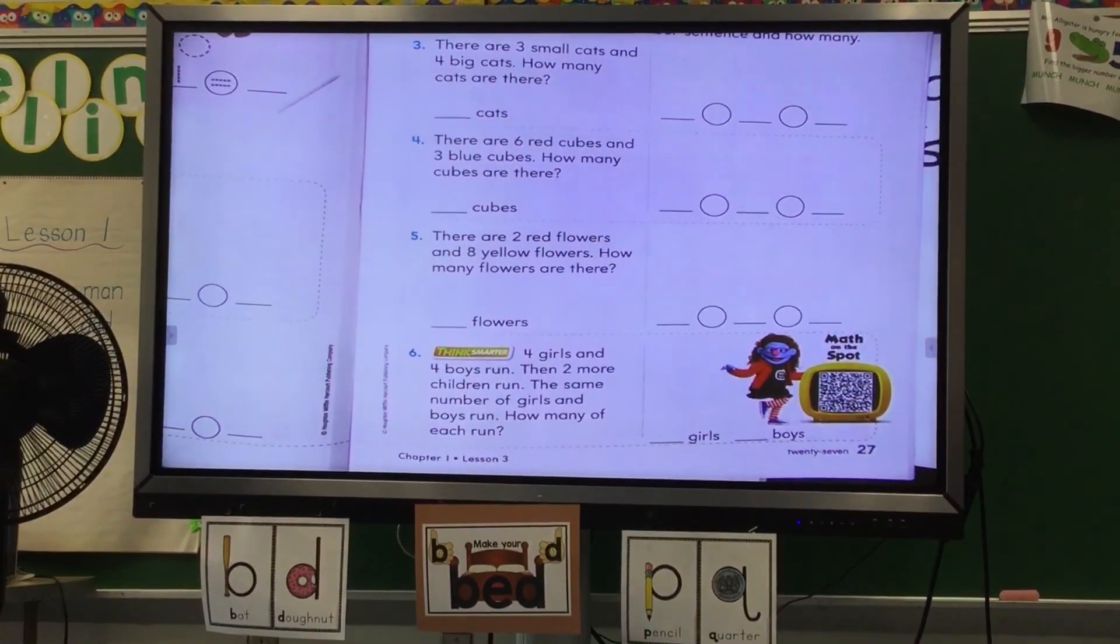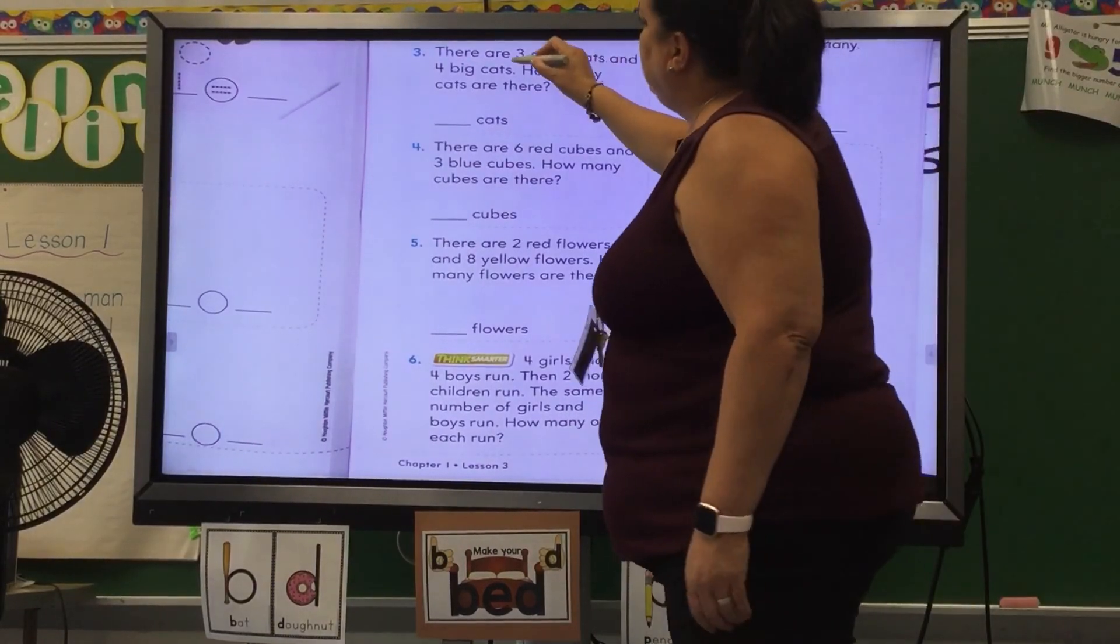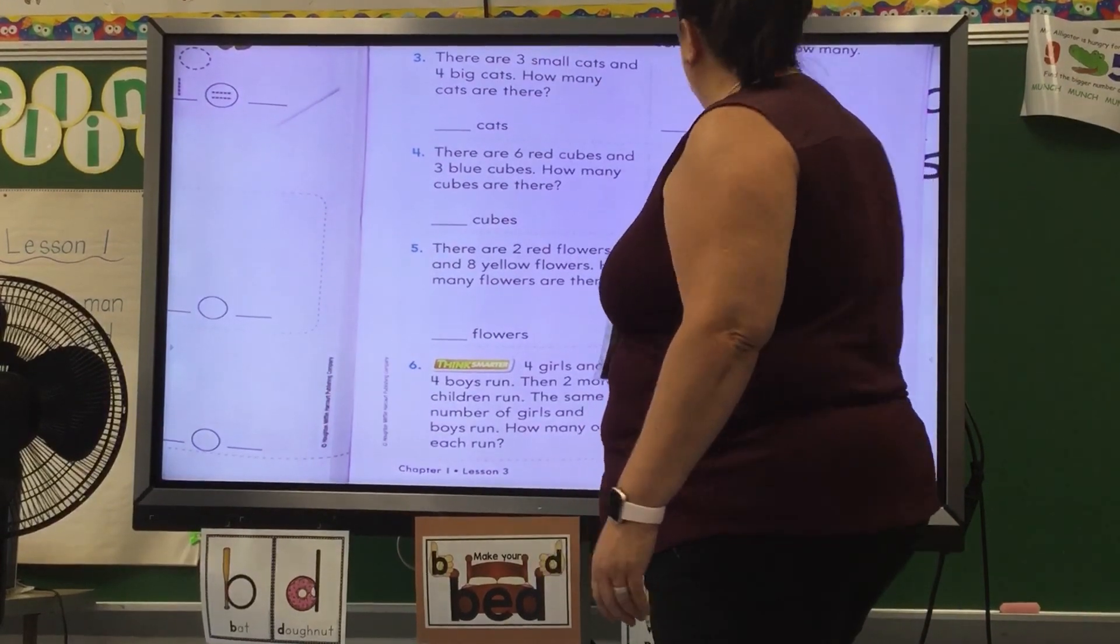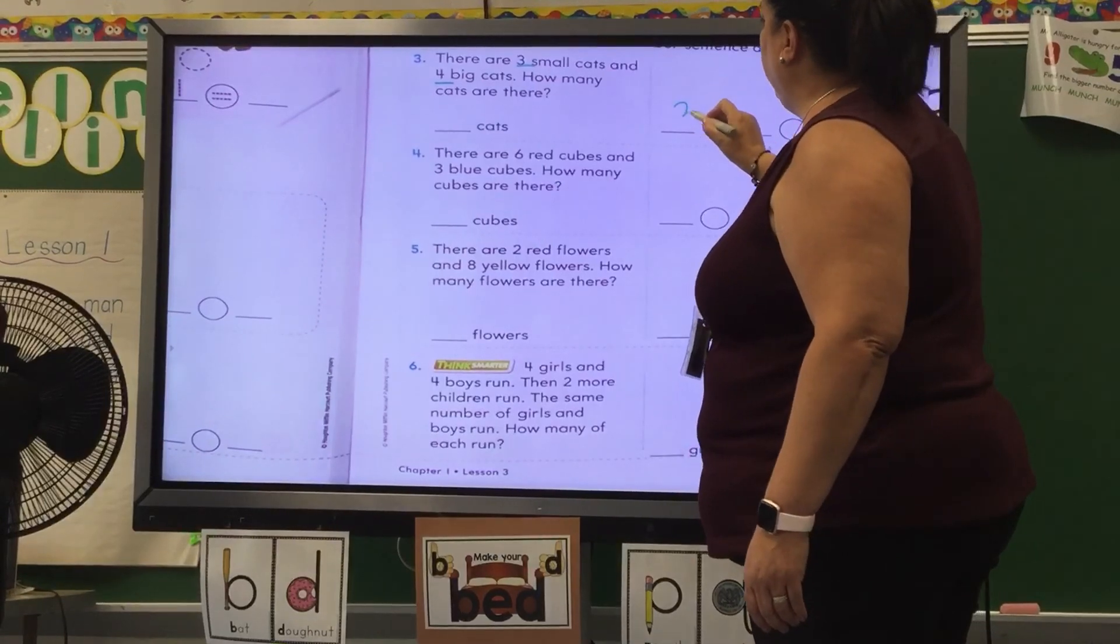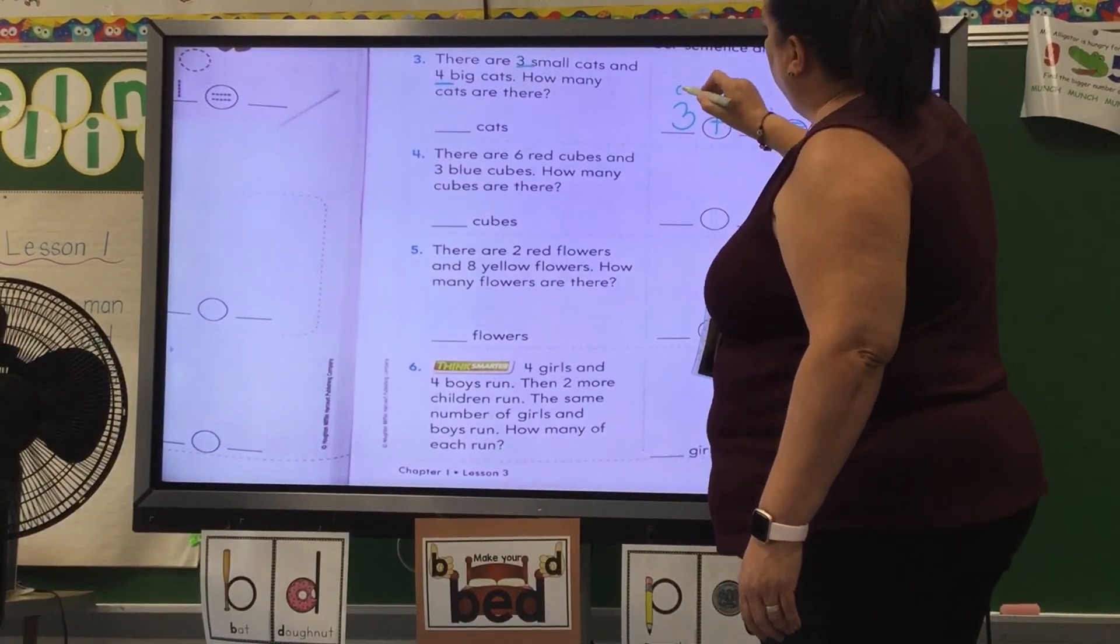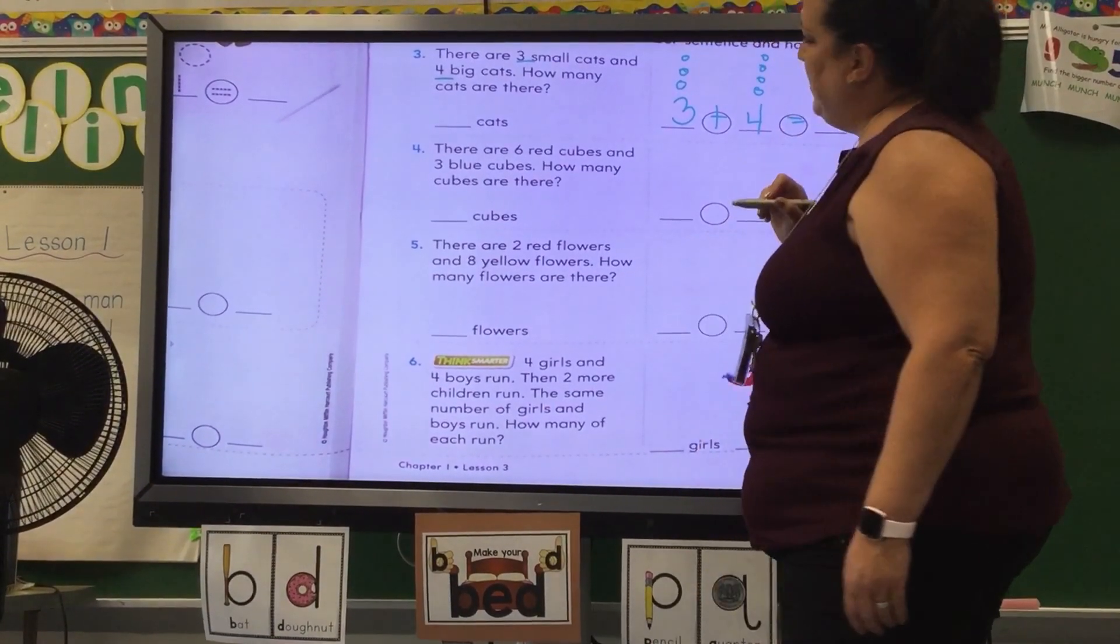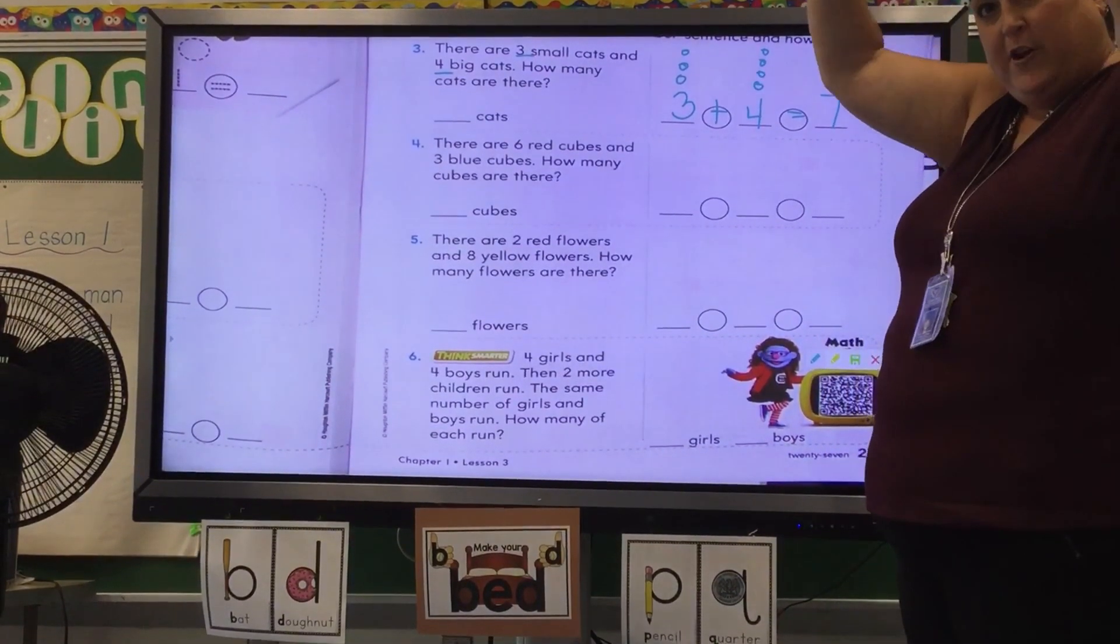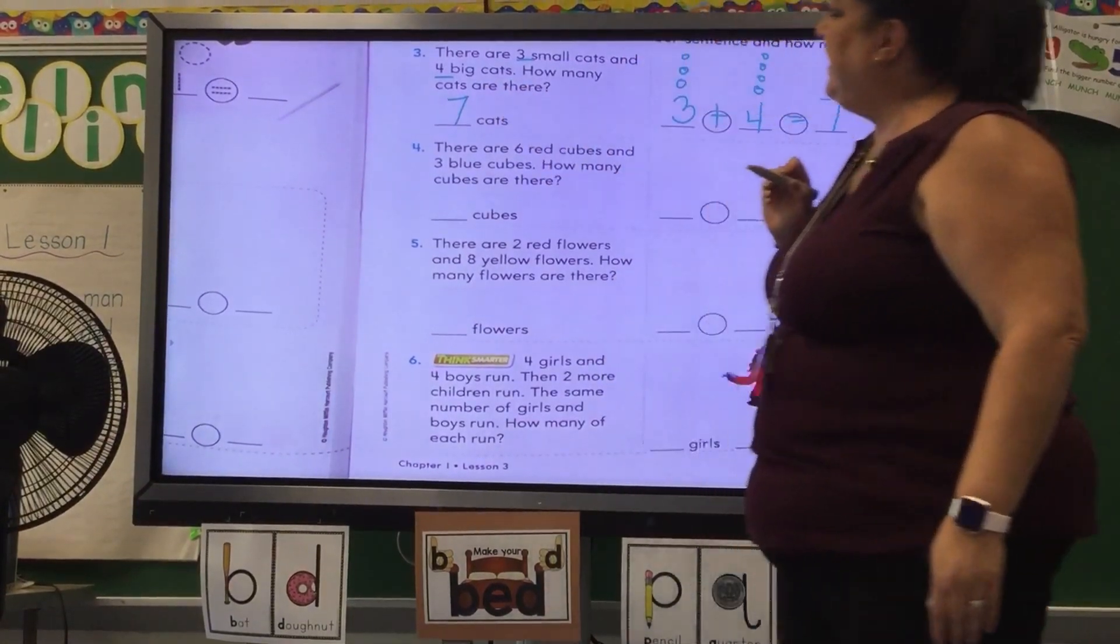Okay. Now you should have done these on your own, right? There are three small cats and four big cats. Three small cats, four big cats. How many cats are there? So three plus four equals. And you can draw your circles. One, two, three. One, two, three, four. How many are there? You should have said seven. Raise both hands up in the air if you've got seven. Seven cats. Did you remember to come back here and do the answer on this side?